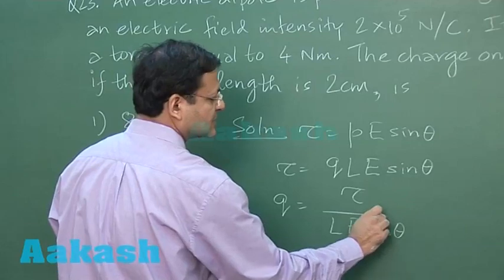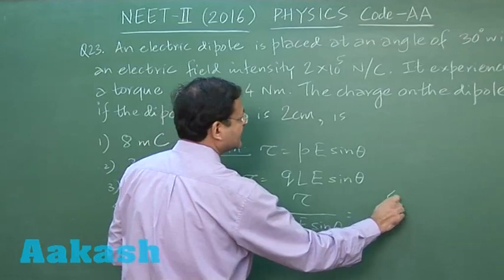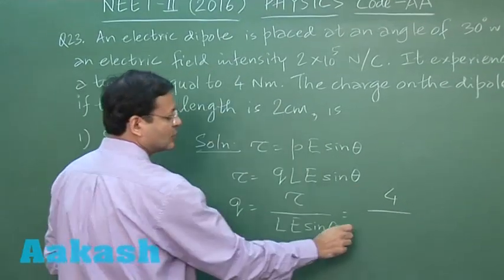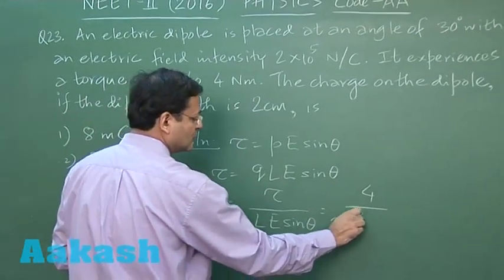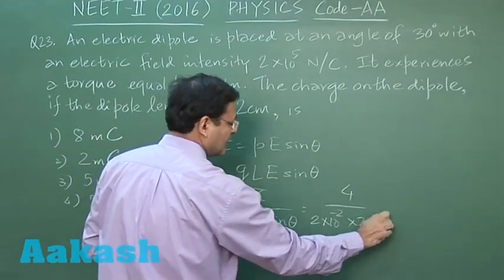Now you are supposed to calculate the value of q. q is torque upon L E sin theta. You substitute the values. Understand what are the values: torque has been given equal to 4 Newton meter, length has been given 2 centimeter. So you convert into meter, 2 into 10 power minus 2, electric field intensity is 2 into 10 power 5, and sin 30.